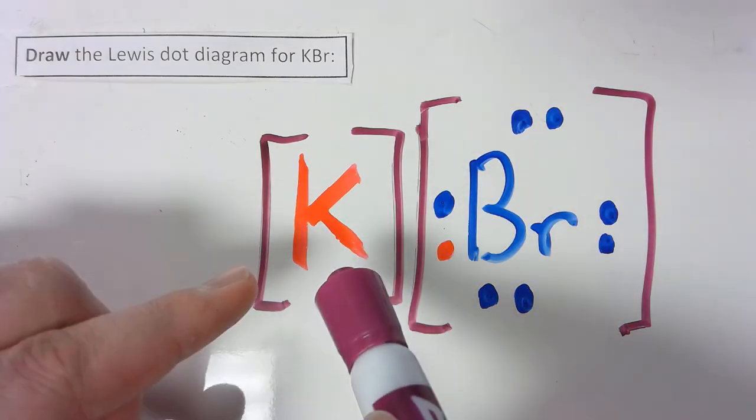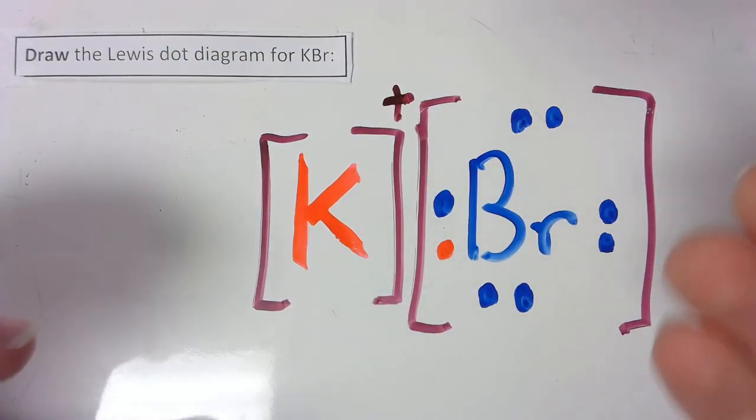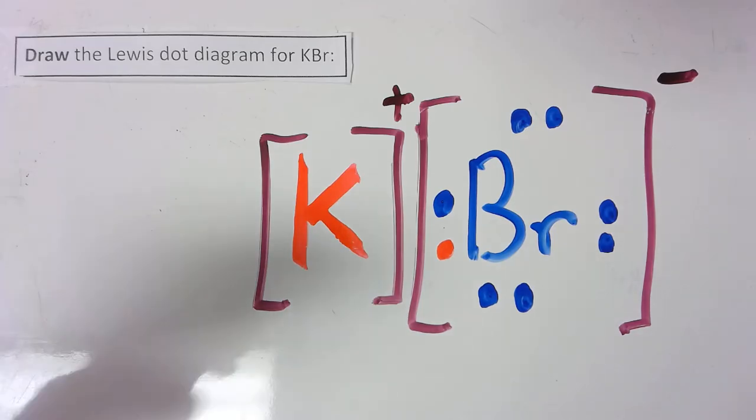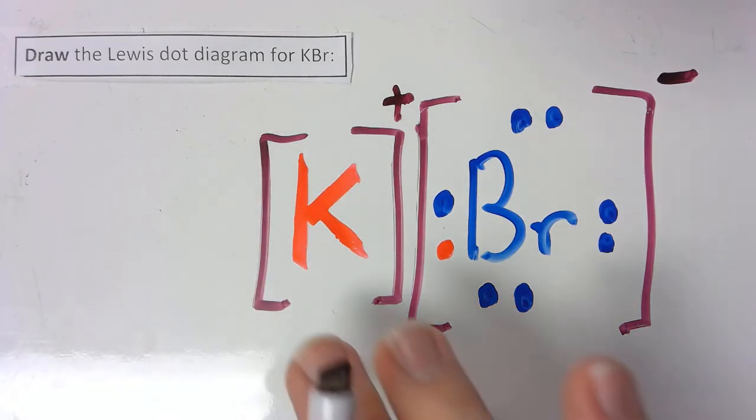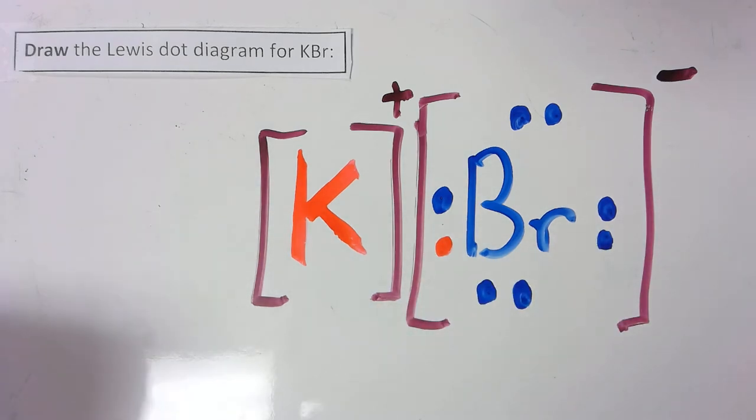The K has given an electron away. That makes him a one plus. The Br has accepted that electron, which makes him a one minus. And you'll notice that everybody gets what they want. The K gave, which is what metals do. The bromine took and now has eight valence electrons, which is what non-metals typically do.